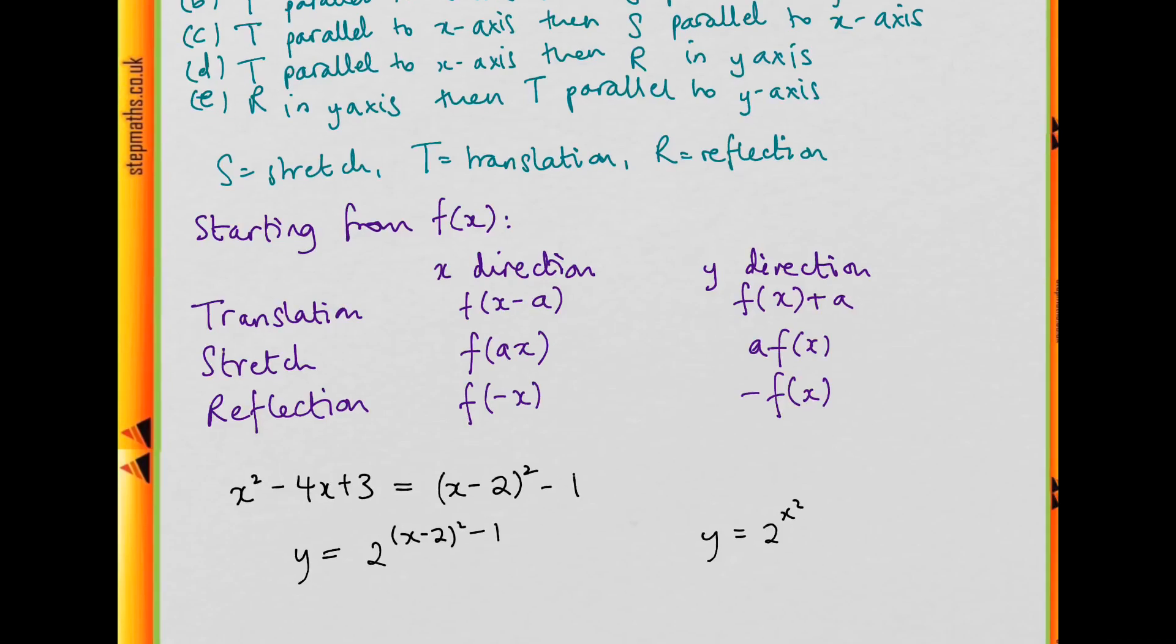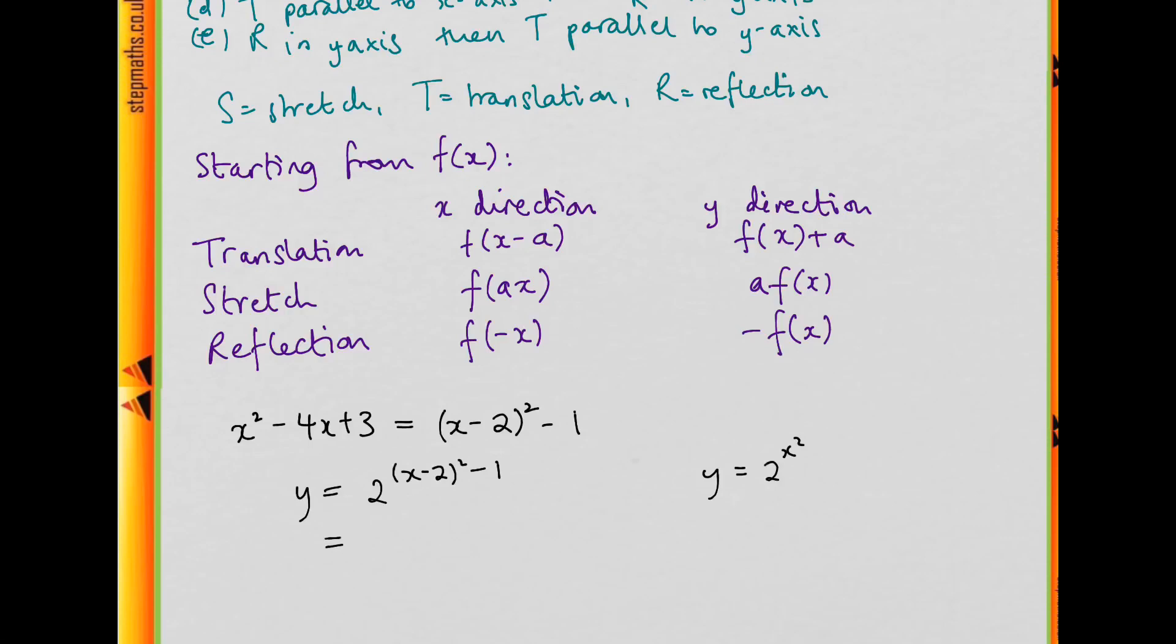Well, we know that this is actually just the same as 2 to the (x minus 2) squared times 2 to the minus 1. So 2 to the minus 1 is just a half. So this is equal to a half times 2 to the (x minus 2) squared. And now we can see that